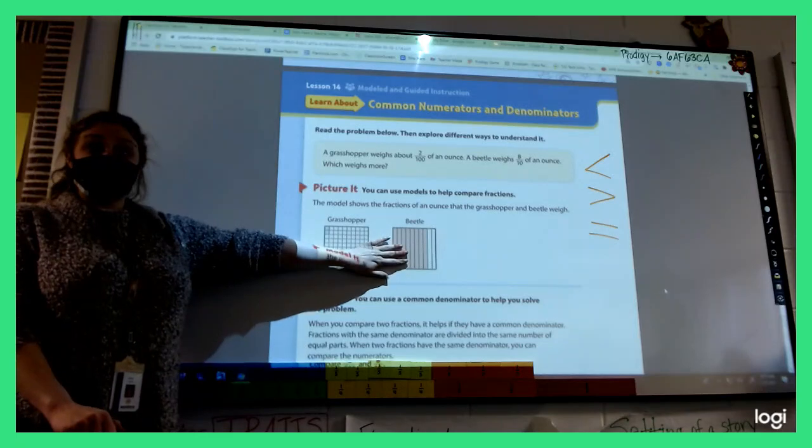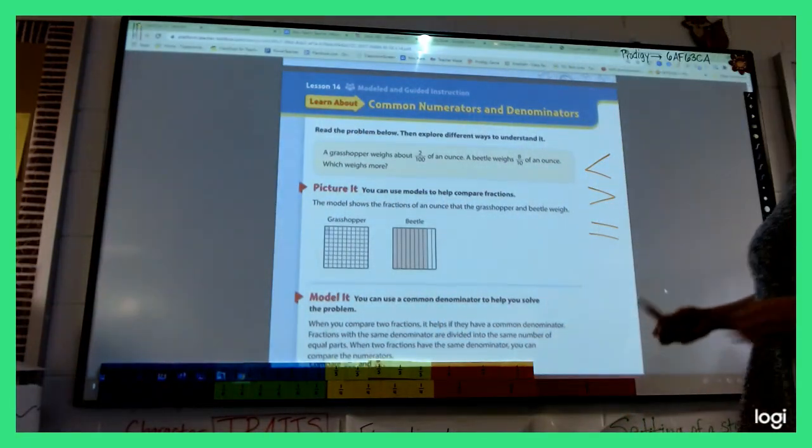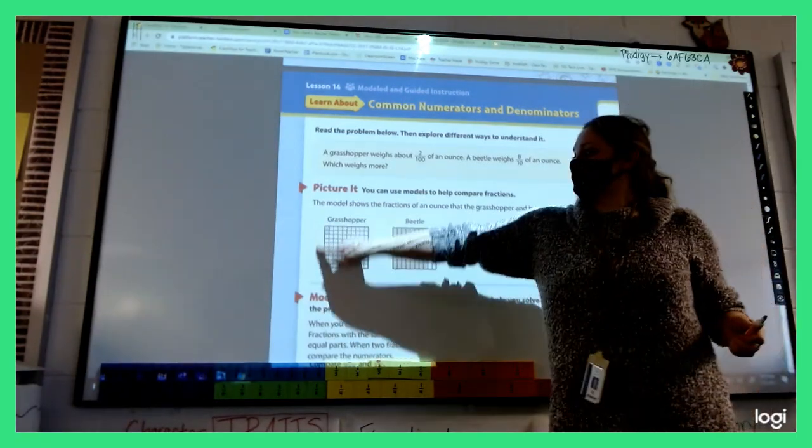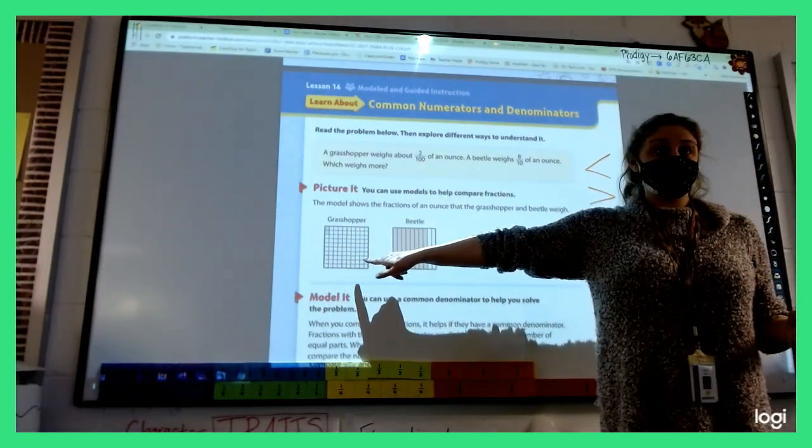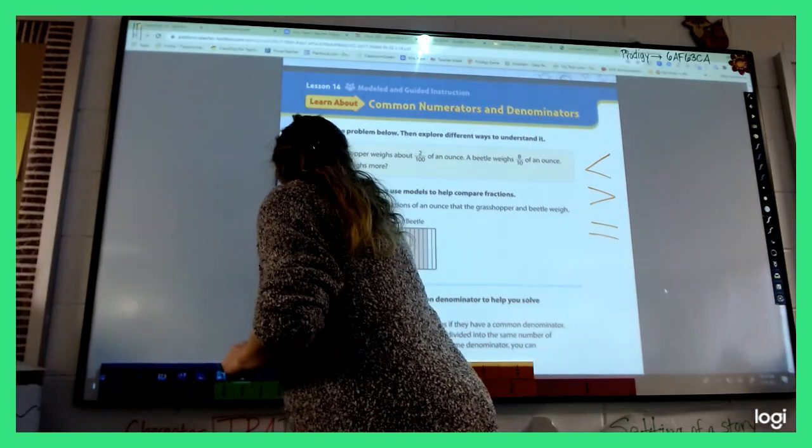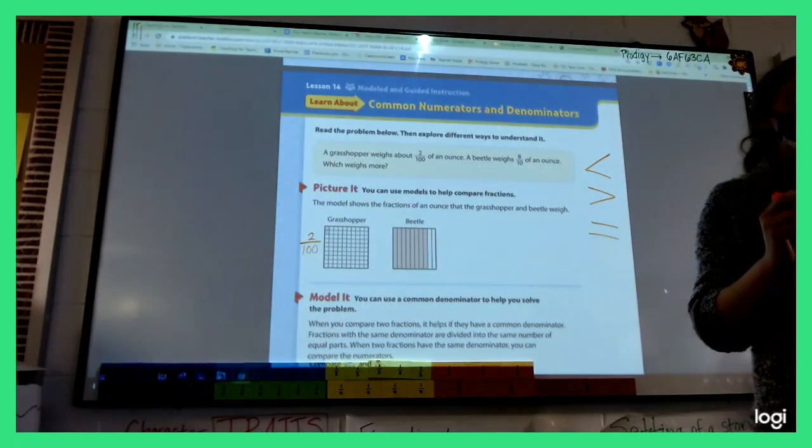The grasshopper weighs about, um, two out of a hundred. We can read that two hundredths. Two hundredths of an ounce. A beetle weighs eight tenths of an ounce. Which weighs more? Okay, now they drew a picture, and everyone up here with me, I'm seeing eyes glazing over already. I know it's early on Monday. Okay, look at the picture.